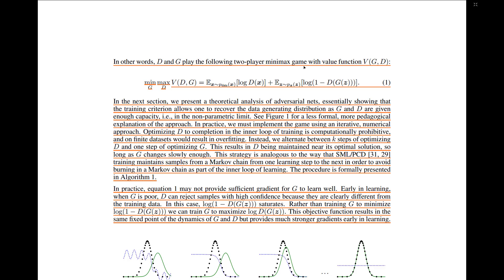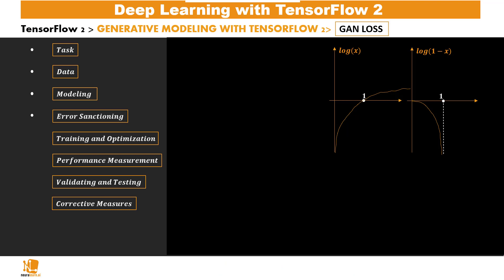We simultaneously train G to minimize log(1 - D(G(z))). D and G play a two-player minimax game with value function V(G, D). Let's now get into the details of the minimax loss function presented in the paper. The discriminator and the generator will have two separate losses, seen from two different perspectives.